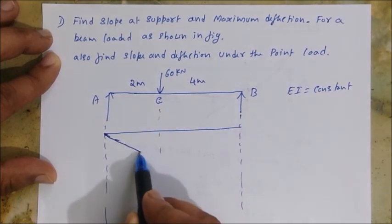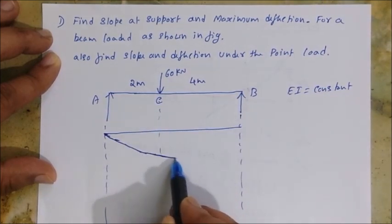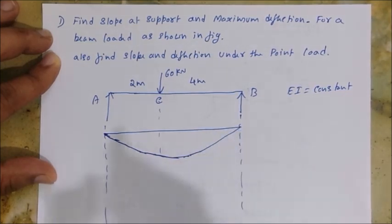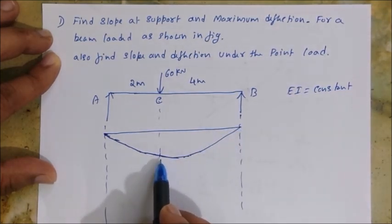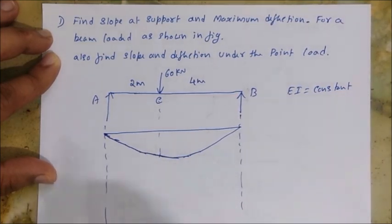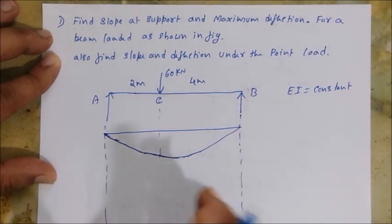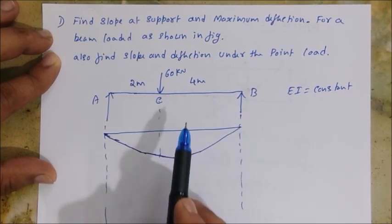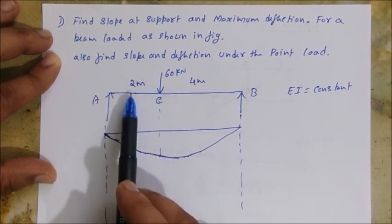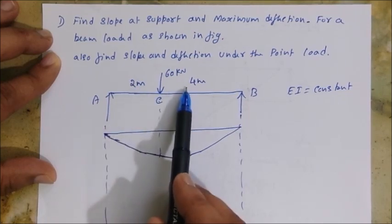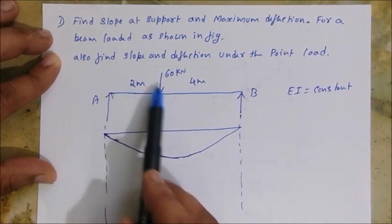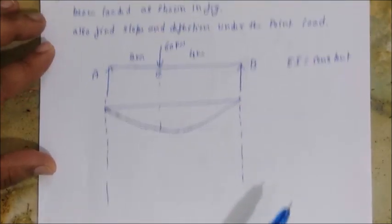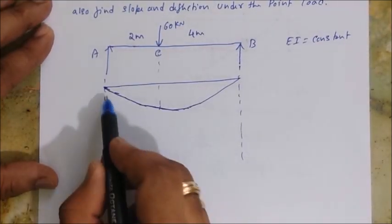Drawing the elastic curve, it is not under C — it is beyond that. So your first aim is to find out where the maximum deflection will occur; it will occur in region CB. Keep in mind: if the problem were reversed — with 4 meters here and 2 meters there — the maximum deflection would occur in region AC.